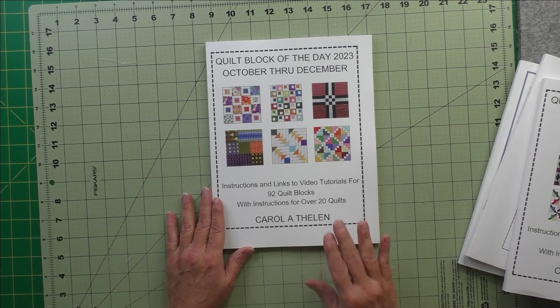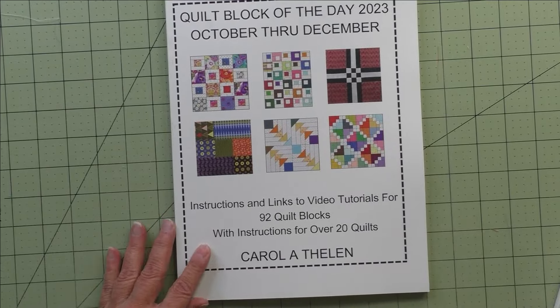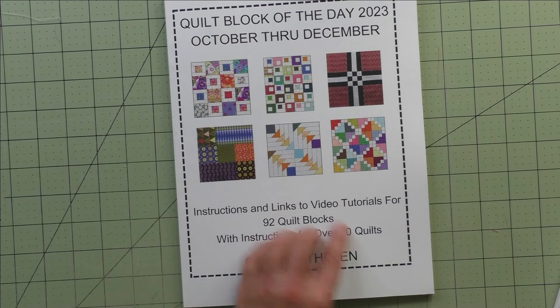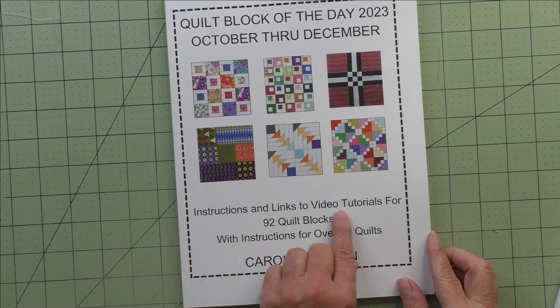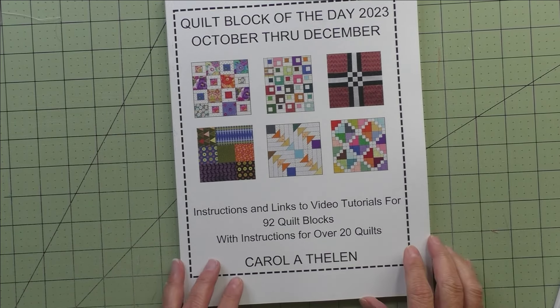And finally we have October through December. So this is the fourth in the series of four books. Like all the other books, it contains every block. This one has 92 quilt blocks and instructions for over 20 quilts.